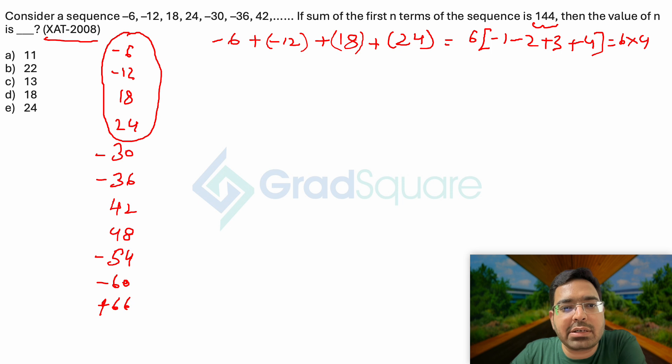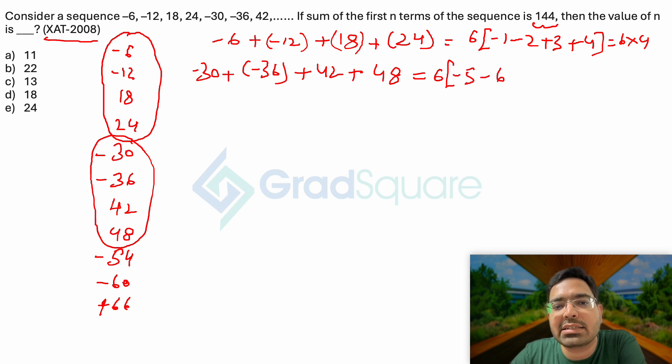Let me look at the next set of numbers: minus 30 plus minus 36 plus 42 plus 48. Now again I am taking the next four set of numbers, and if I take 6 common, what am I going to get? I am going to get minus 5, minus 6,